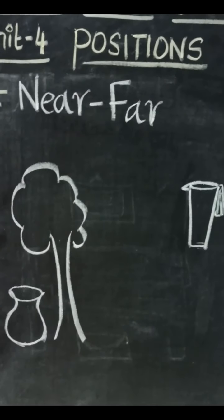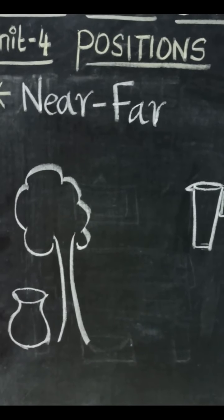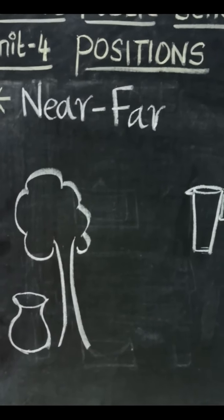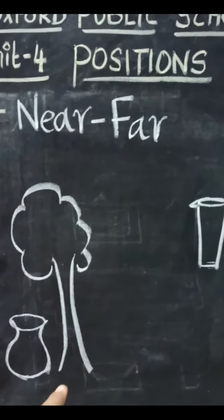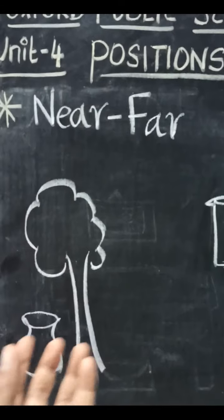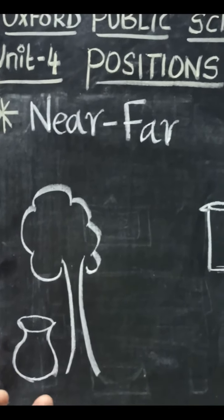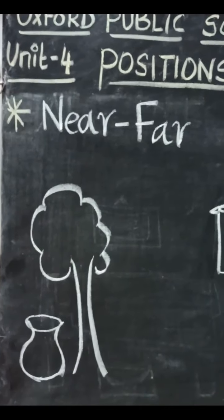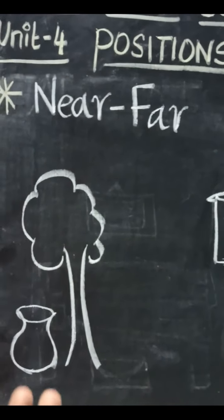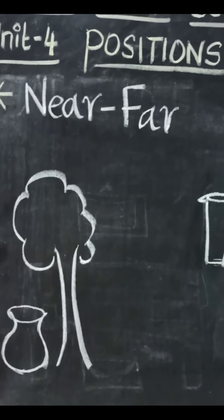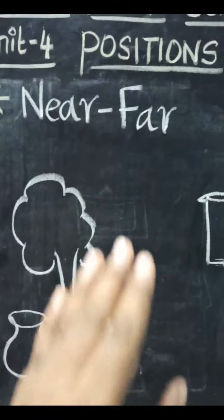The next position is near-far. Look at the diagram here. There is a tree. You could see the tree, and a pot near the tree. Near means next to it, close by. An object that is close to another object. So there is a pot near the tree.